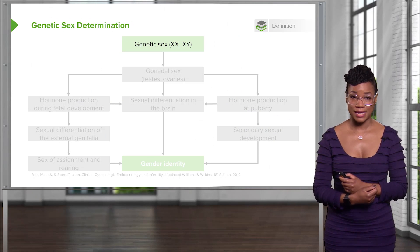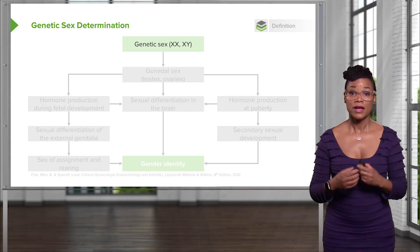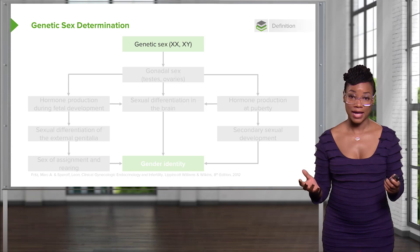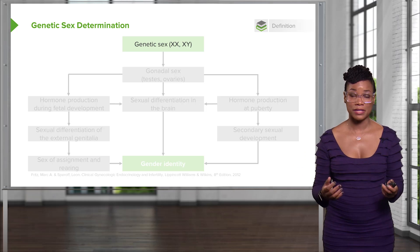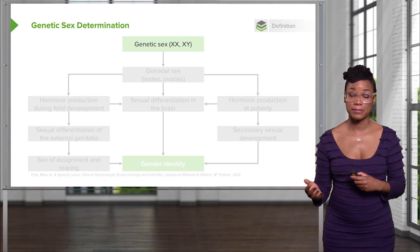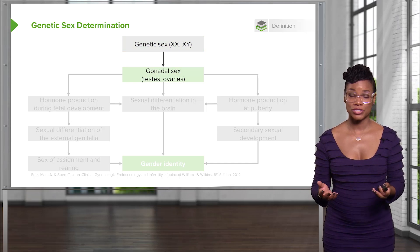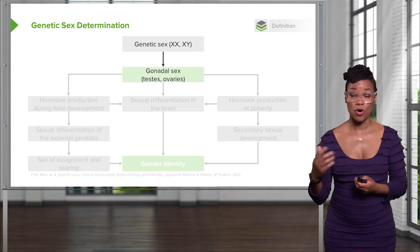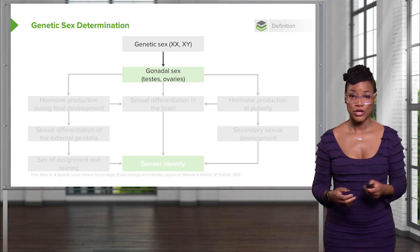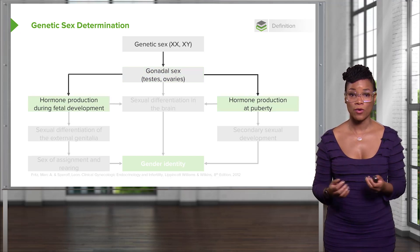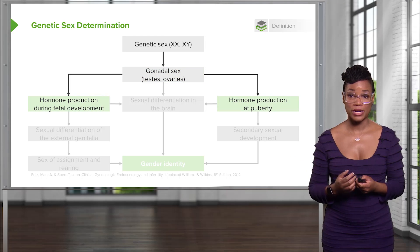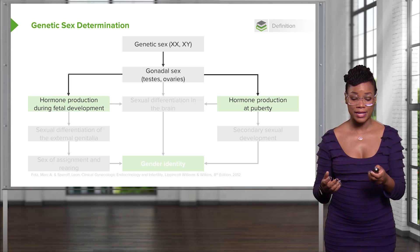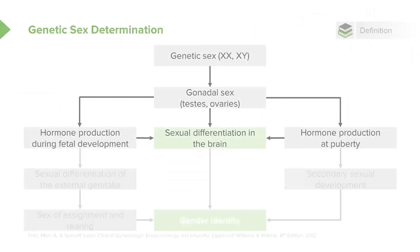Let's talk about genetic sex. Genetic sex is your XX or XY — 46XX being female, 46XY being male. That typically determines your gonadal sex. Gonads can be either ovaries or testes, and those ovaries or testes make hormones. The hormone production during fetal development or puberty will determine external phenotype, and those differences will also be seen in the brain.